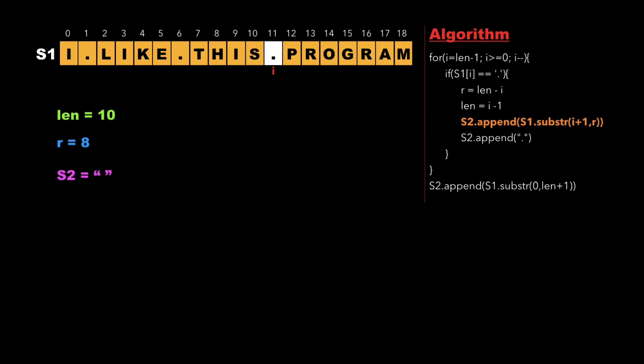We then append the substring from i plus 1 to r into string s2, so s2 now contains 'program', and then we append a dot after it.